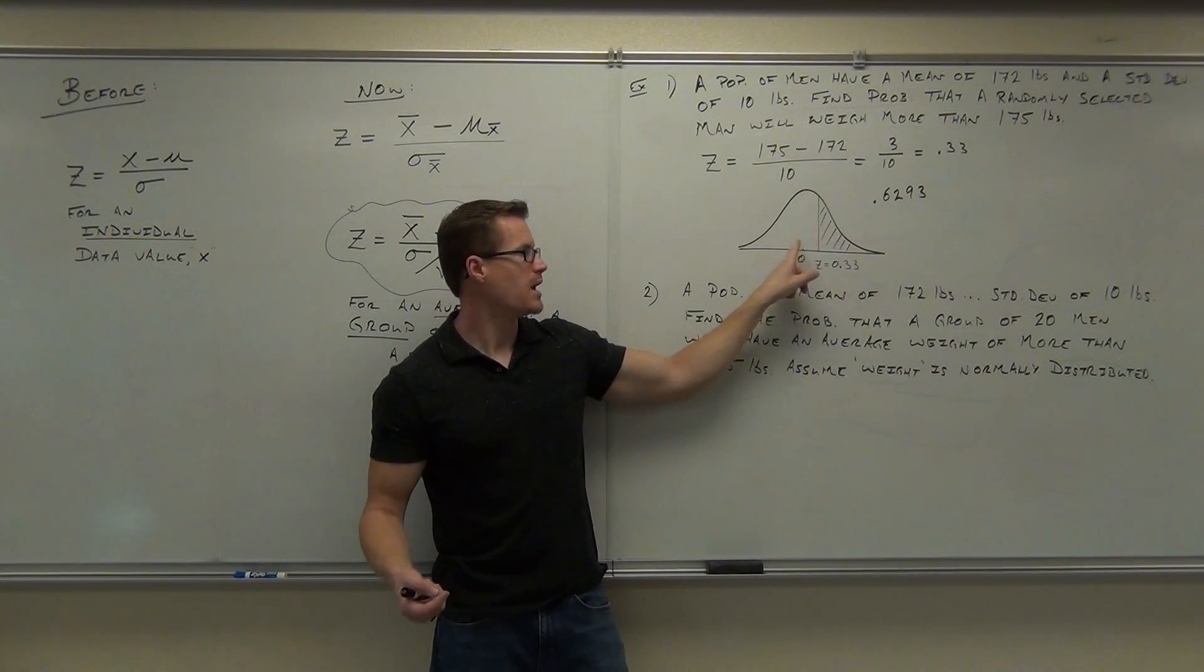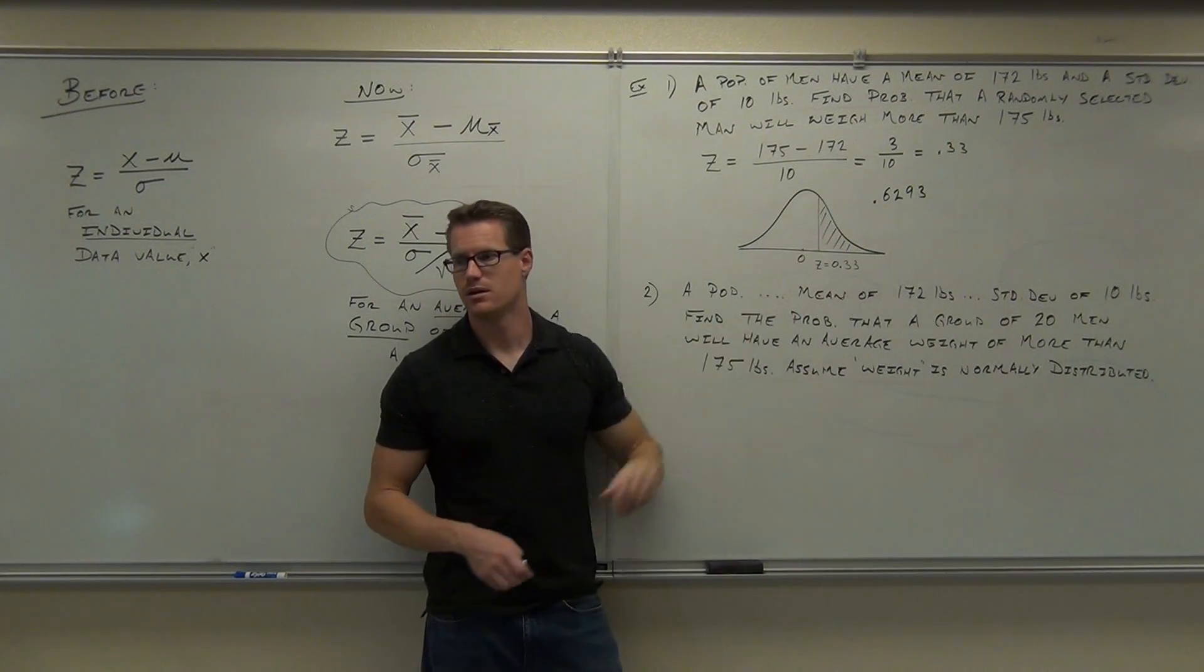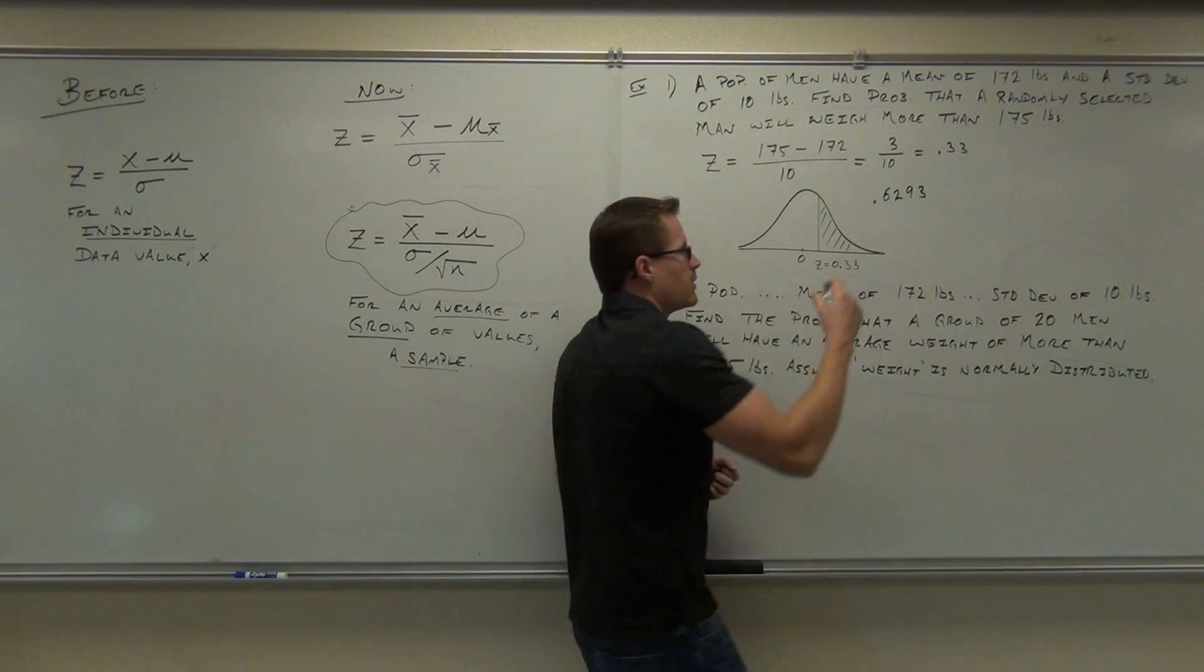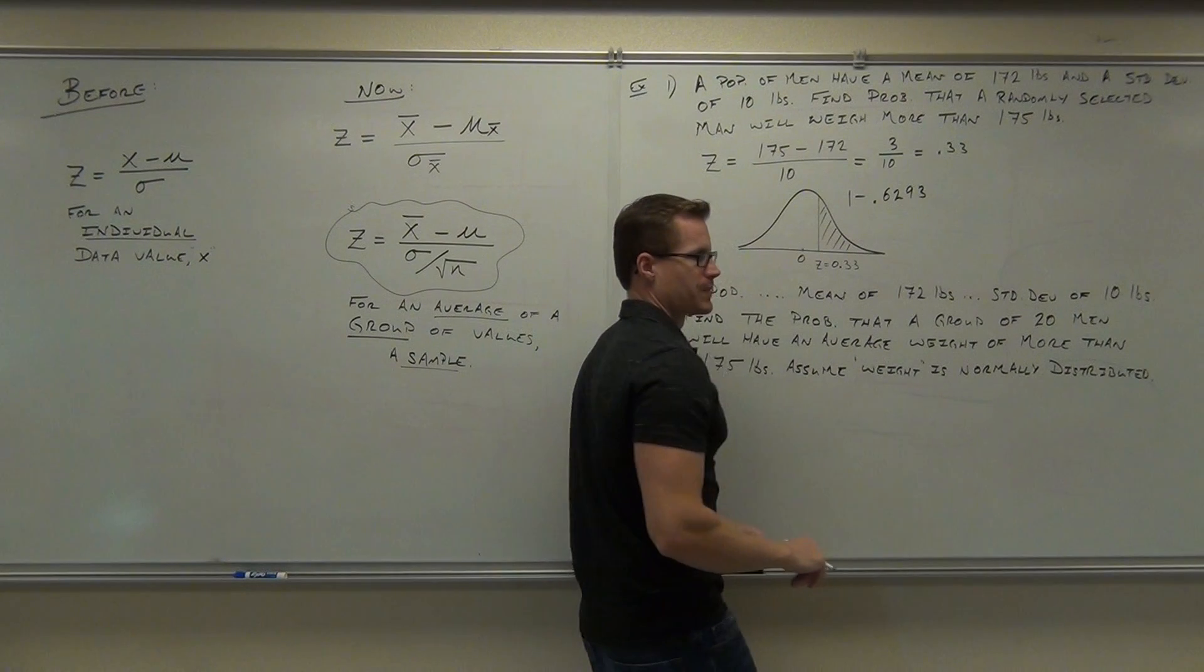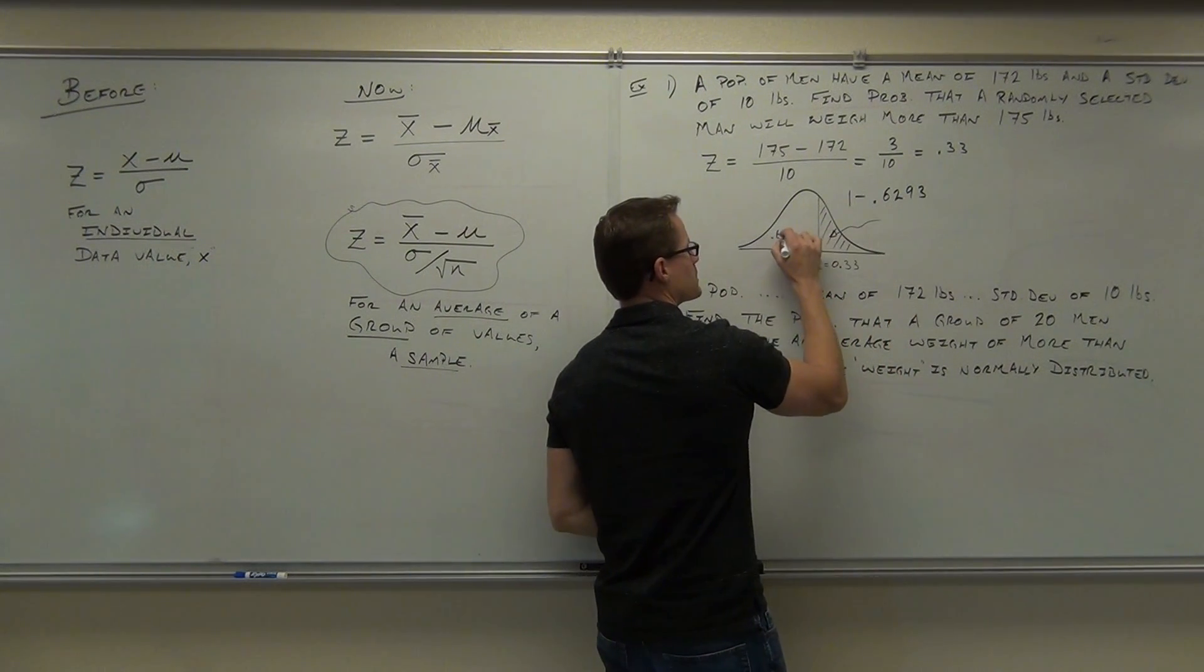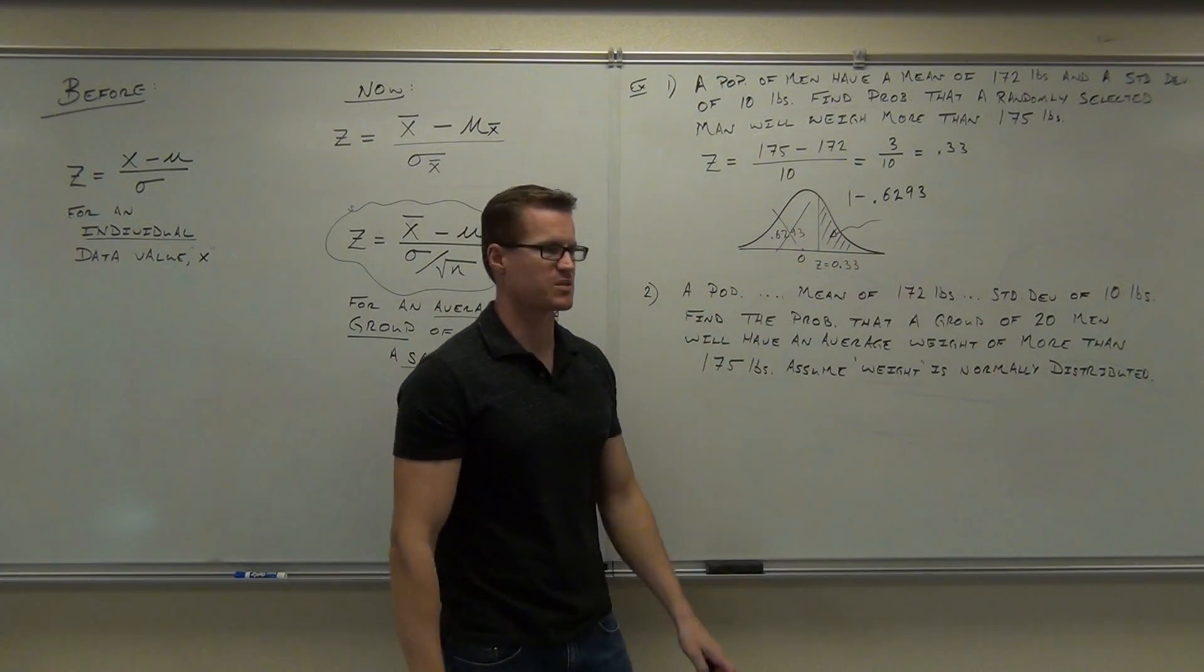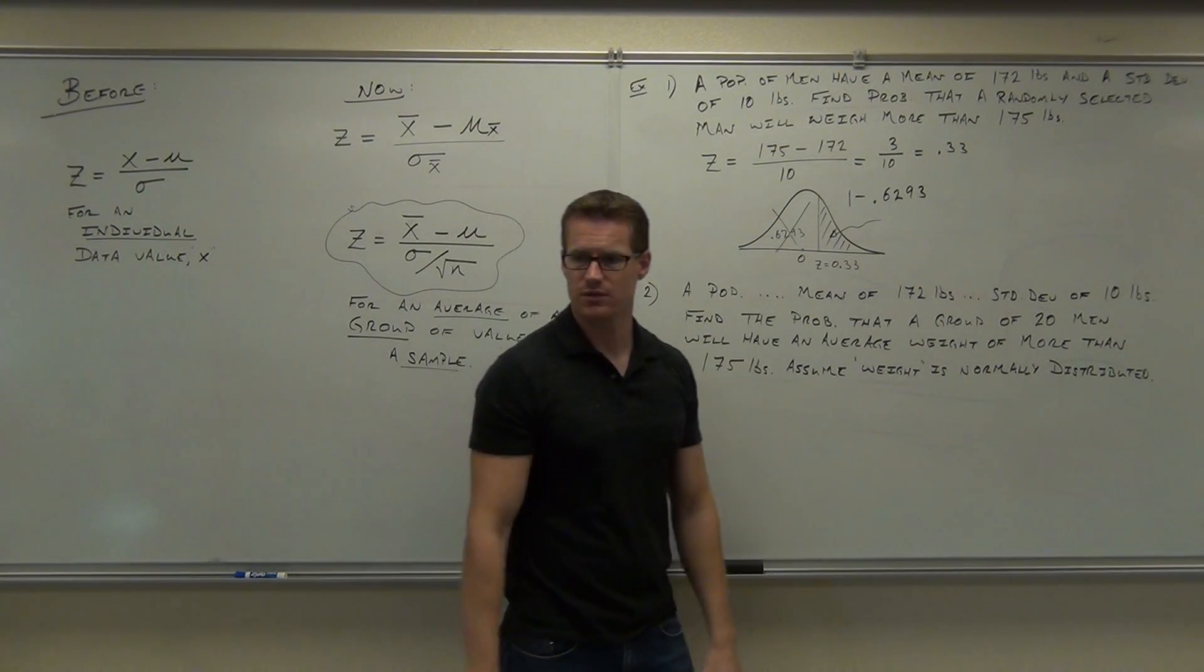I don't want the left. I want the right. How do I take this value and make it the right side, the correct side? Go 1 minus that. That's going to give you this one. So this was 0.6293. I don't want that. I want this one. 1 minus that is 0.3707.